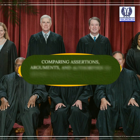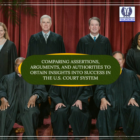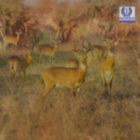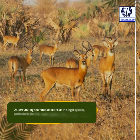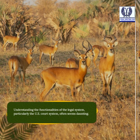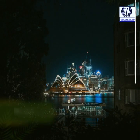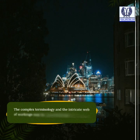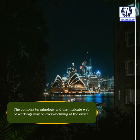Comparing assertions, arguments, and authorities to obtain insights into success in the U.S. court system. Understanding the functionalities of the legal system, particularly the U.S. court system, often seems daunting. The complex terminology and the intricate web of workings may be overwhelming at the onset.